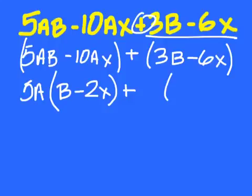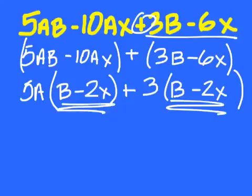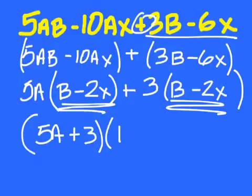On the second group, what comes out of both of them? Just a 3. So what do I have to multiply by to get back to those two items? B minus 2x. So we have the same item here and here. So the answer is 5a plus 3 and b minus 2x.